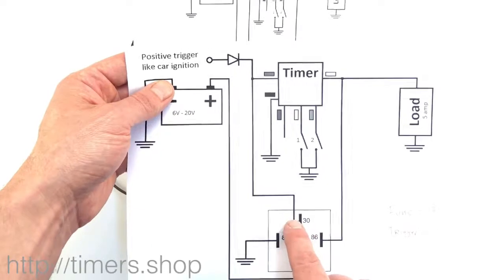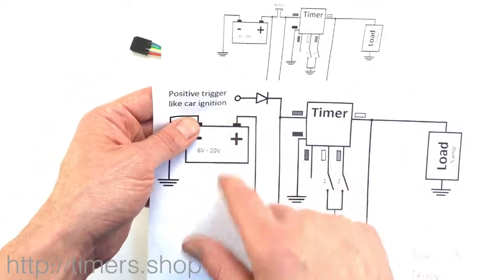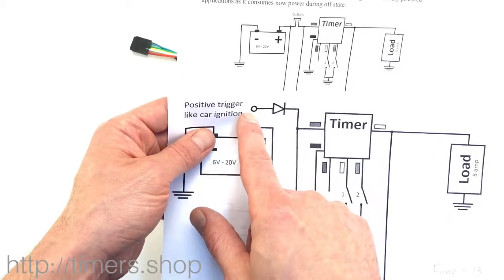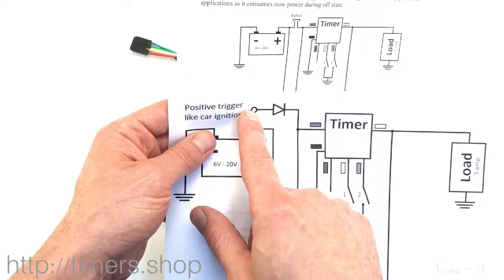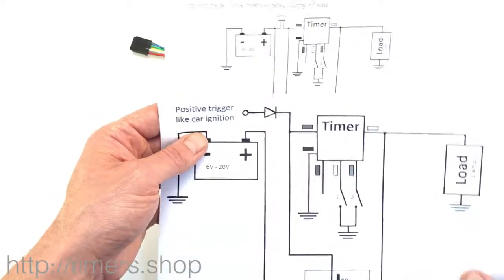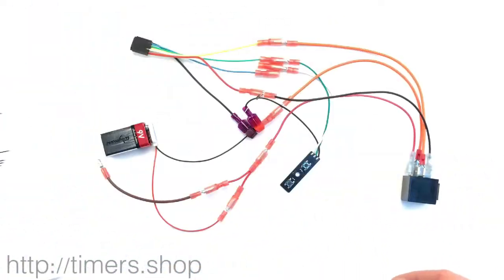So when the ignition is off, zero volts, it should be zero volts even if the timer is still powered. That's why the diode is here. So let's configure it to function 13.